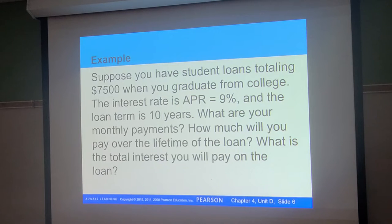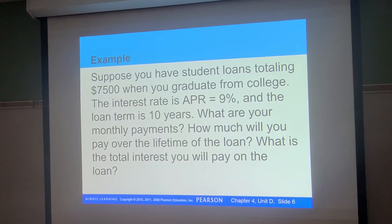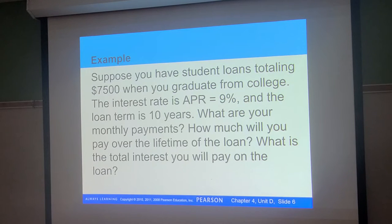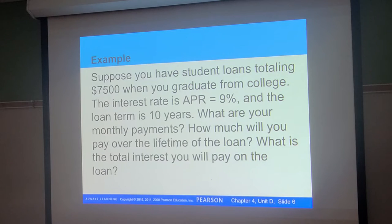Here's a familiar scenario: student loans totaling $7,500 when you graduate, interest rate about 9%, loan term 10 years. What are your monthly payments? How much will you pay over the life of the loan? And what is the total interest? This will open your eyes to how much you're really paying in interest — not only did we look at examples where you're receiving interest, but when you're taking out loans it gets more intimidating. So let's calculate: $7,500, APR 9%, for 10 years.